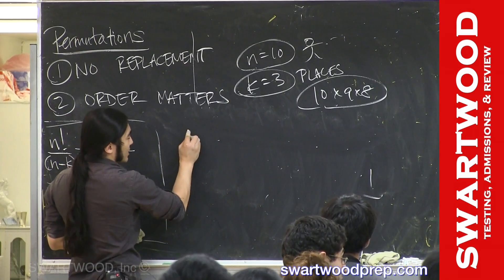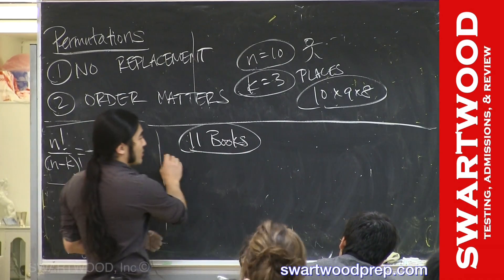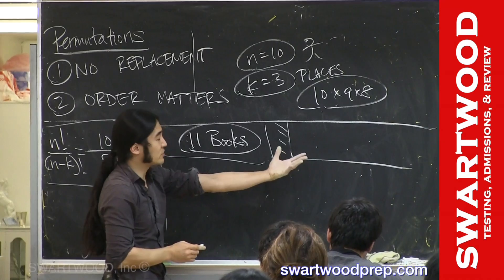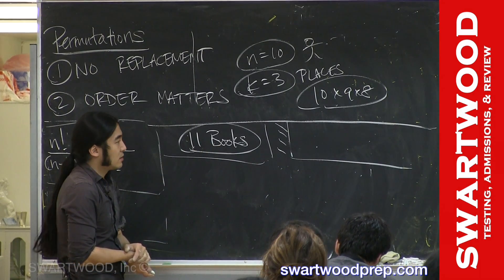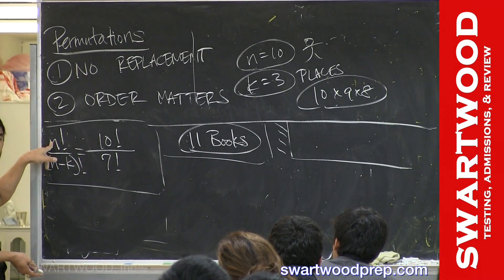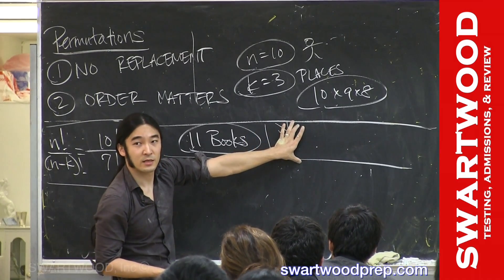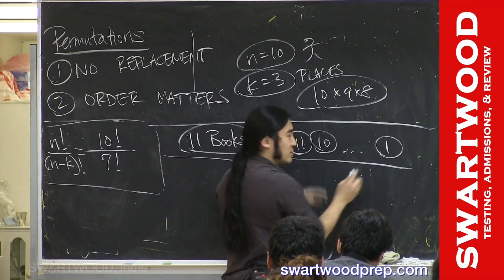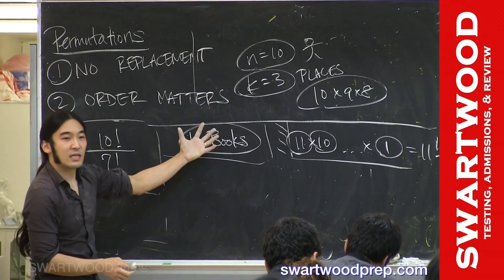We have 11 books. Version 1 is mellow; version 2 requires a bit more thinking. You have 11 books lined up on a shelf from left to right — so order matters, and a book can't be in two positions at once, so no replacement. How many ways can you do this? You could use the formula: 11 guys, all 11 spots matter, 11 minus 11 is 0, and 0 factorial is 1 — so it's just 11 factorial. Or just think it through: 11 choices for the leftmost spot, then 10, then 9, all the way down. Multiply — it's 11 factorial.